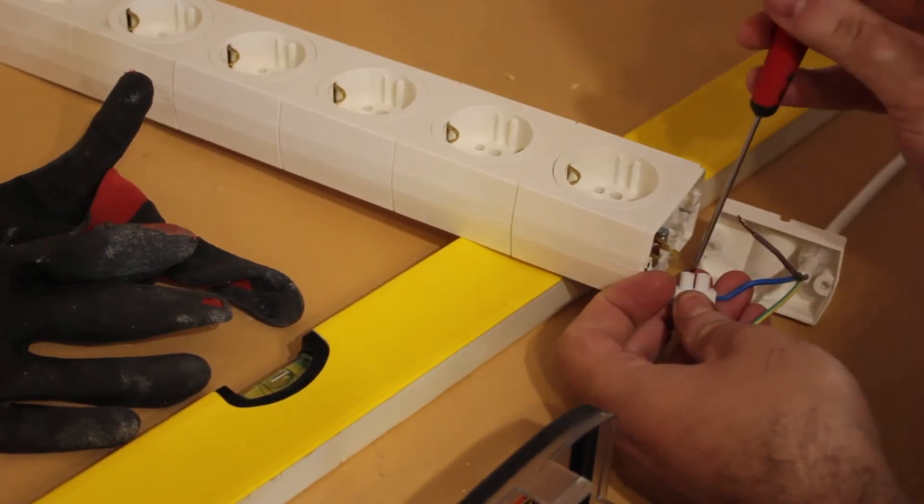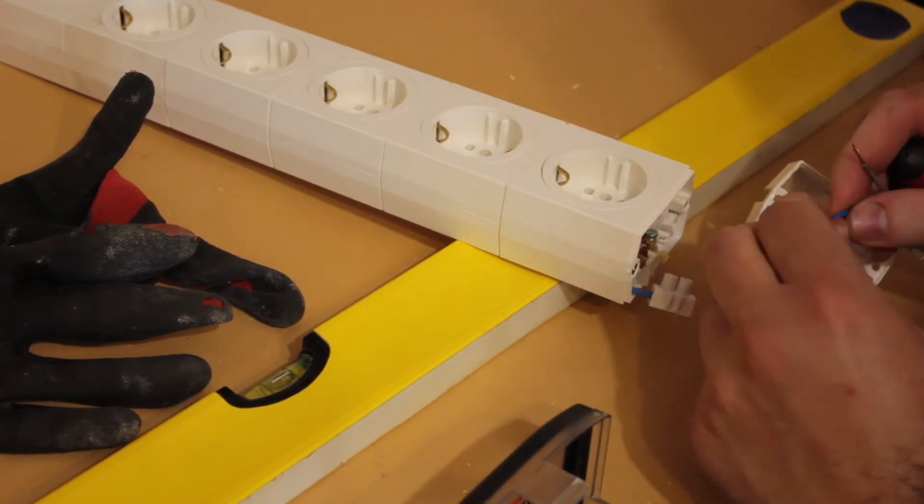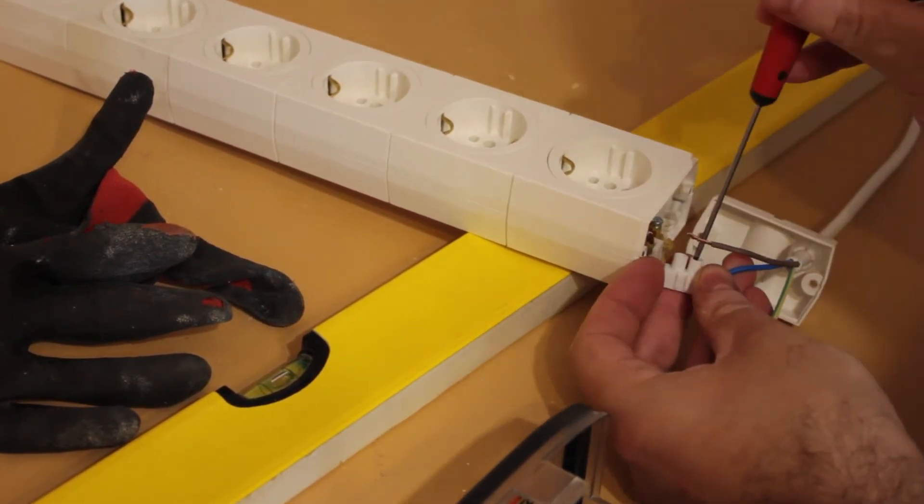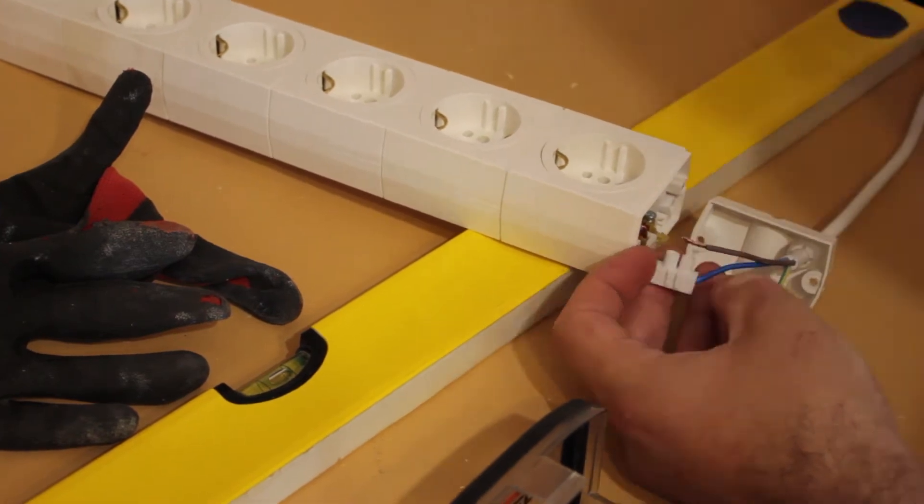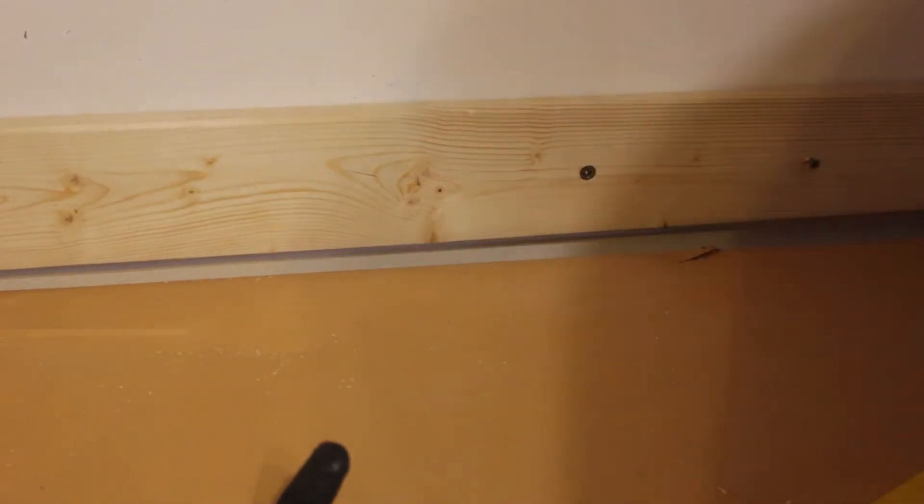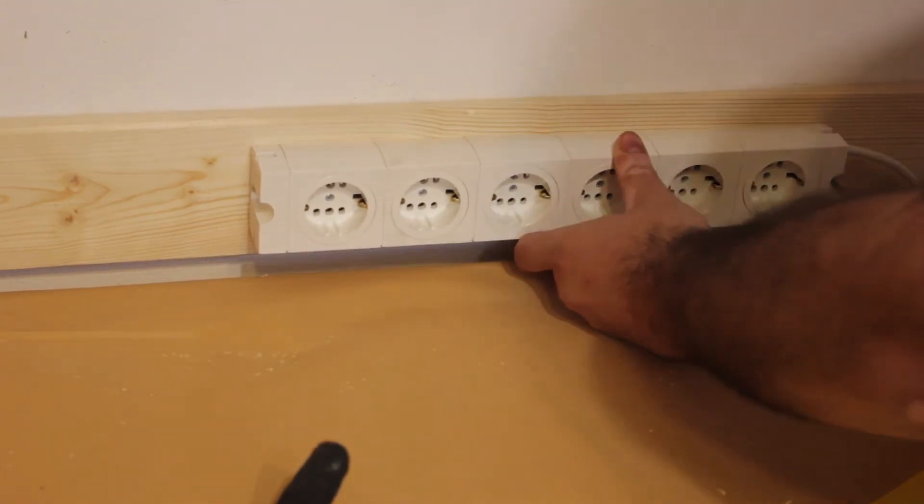I then started working on the wiring. Rather than an extension surge protector, I'm using a 6 outlet power module. I temporarily wired it in and screwed it to the lower wood plank.